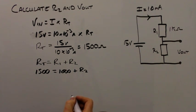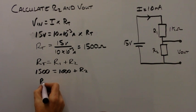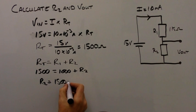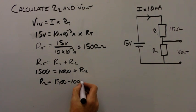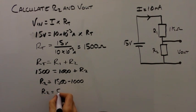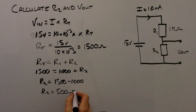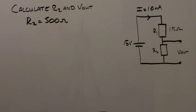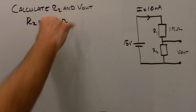Making R2 the subject of the equation, R2 equals 1500 minus 1000, hence R2 equals 500 ohms. So R2 equals 500 ohms. Now we're asked to calculate Vout.